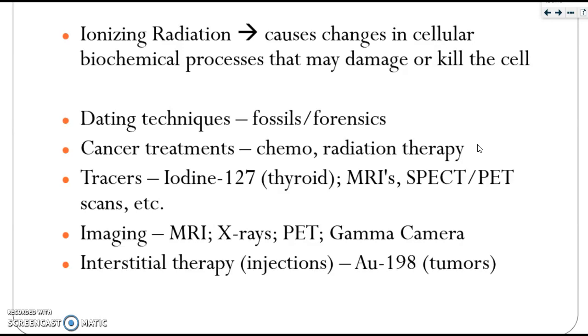So nuclear chemistry is used for dating techniques for fossils and forensics. This is usually carbon-14 because it's radioactive. Lots of different types of cancer treatments, chemo, radiation therapy. It can be used for tracers.